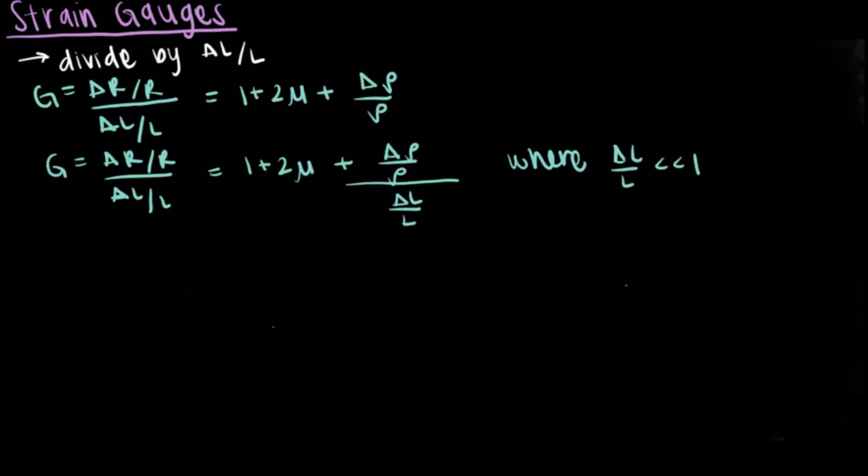By dividing the relative change in length, the equation can be arranged. The gauge factor is the ratio of small relative changes in resistance and length. This factor depends on the material.